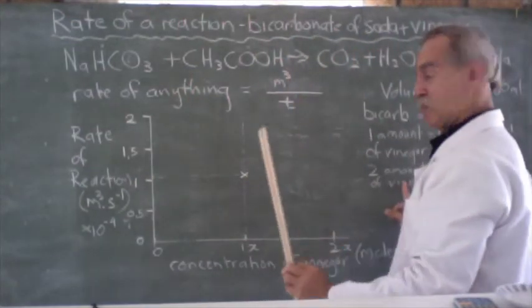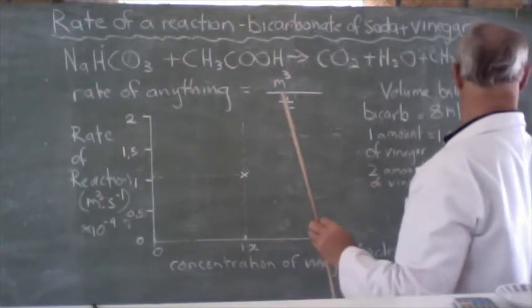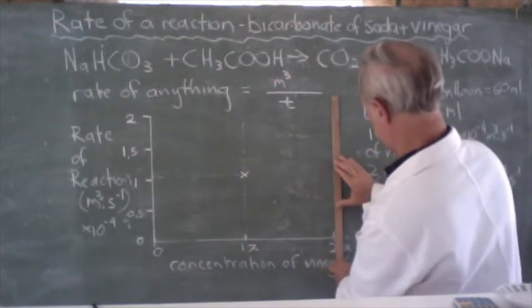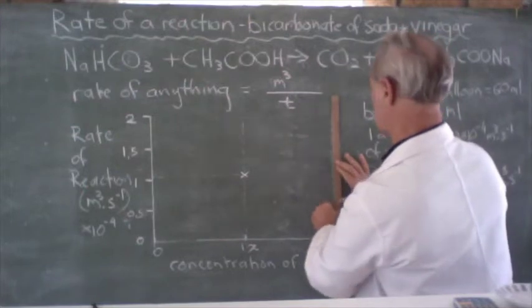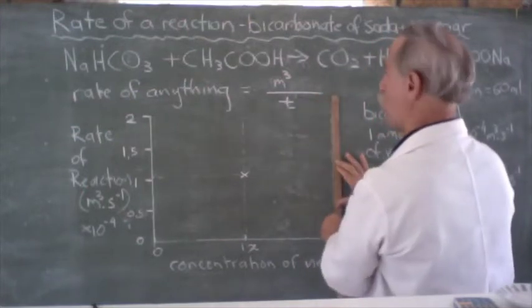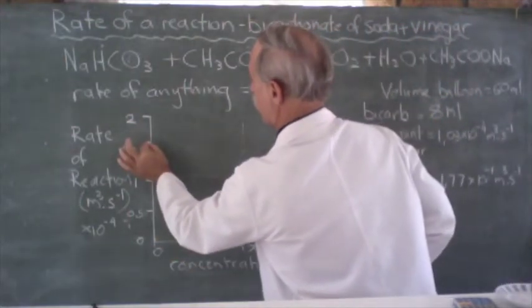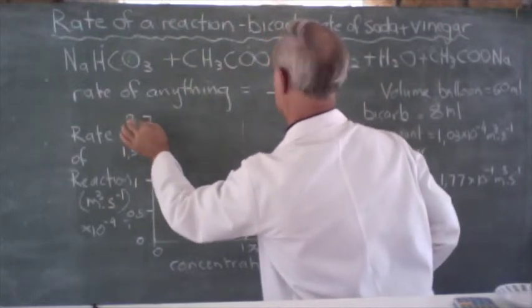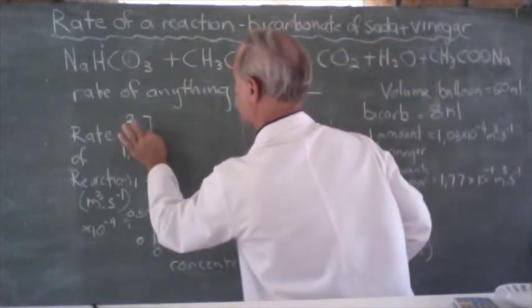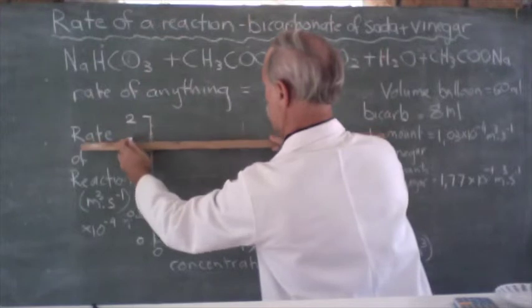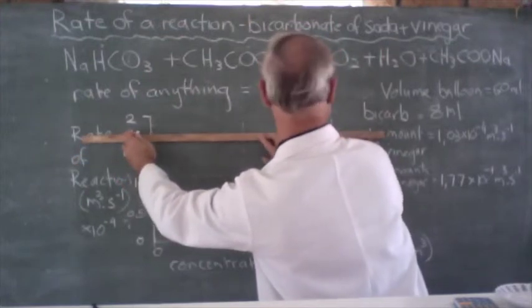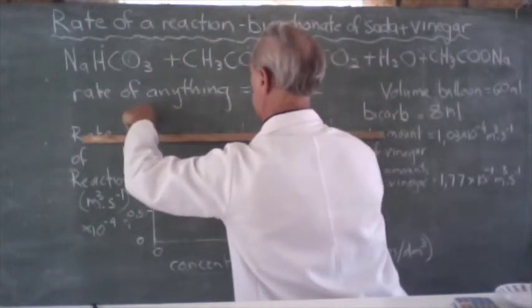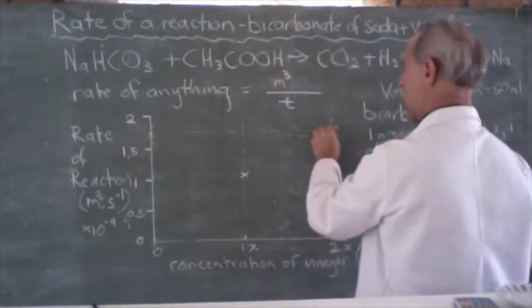For two amounts of vinegar, we had 1.77 times 10 to the minus 4. So, for two amounts, let's take our plot up there. We had 1.7. So, there is 1.5, 1.6, 1.7, 1.77. There is 1.7, there is 1.77, and there is our second plot.